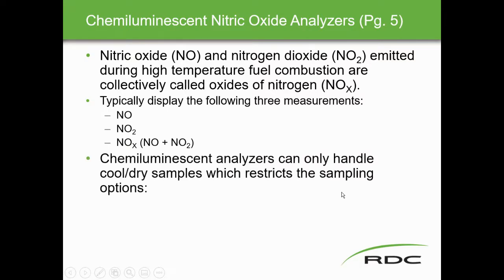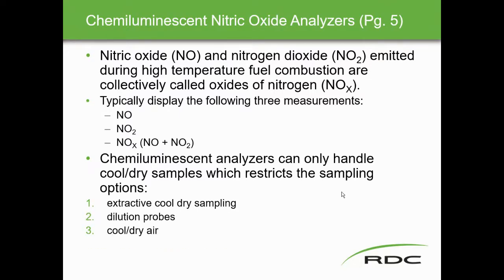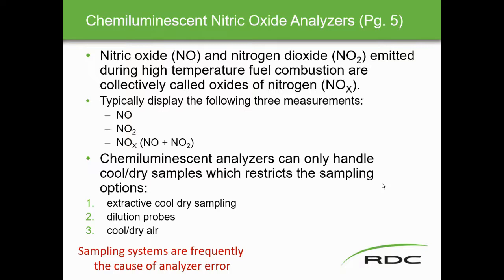Chemiluminescence analyzers can only handle cool, dry samples, which restricts sampling options. These analyzers are normally located away from the plant, in the direction of prevailing winds, so we're looking for cool dry samples. We need an extractive cool dry sample system, using dilution probes and cool dry air. Sample systems are frequently the cause of analyzer error — it's not the analyzer itself, it's the sample system.